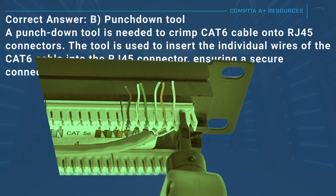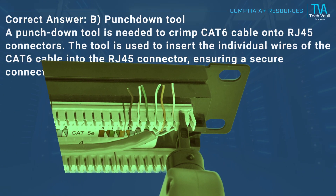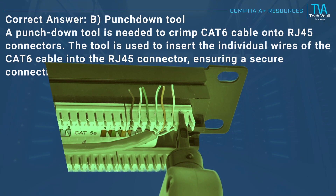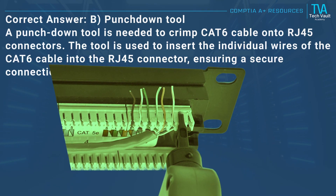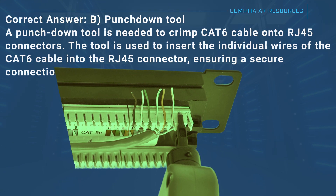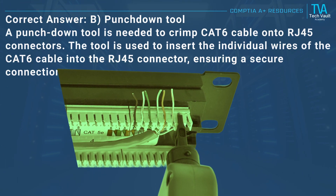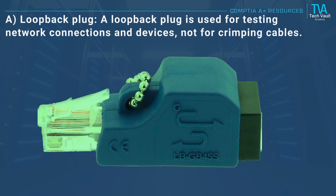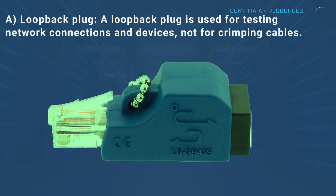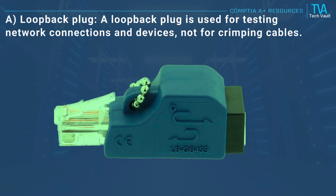Correct answer: B, punchdown tool. A punchdown tool is needed to crimp CAT6 cable onto RJ-45 connectors. The tool is used to insert the individual wires of the CAT6 cable into the RJ-45 connector, ensuring a secure connection. A, loopback plug: a loopback plug is used for testing network connections and devices, not for crimping cables.